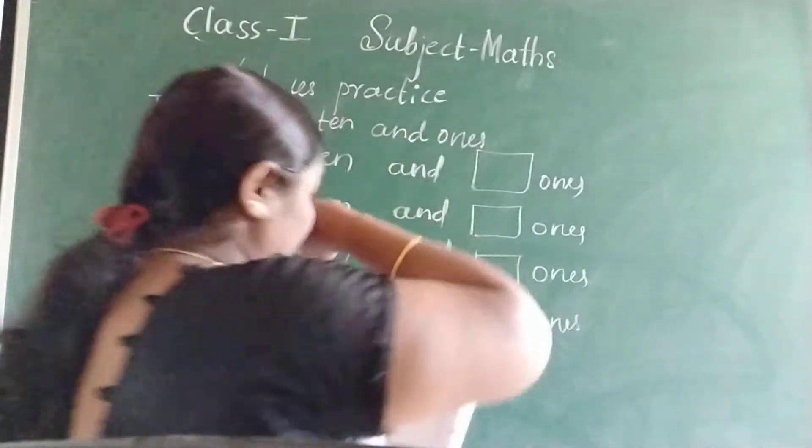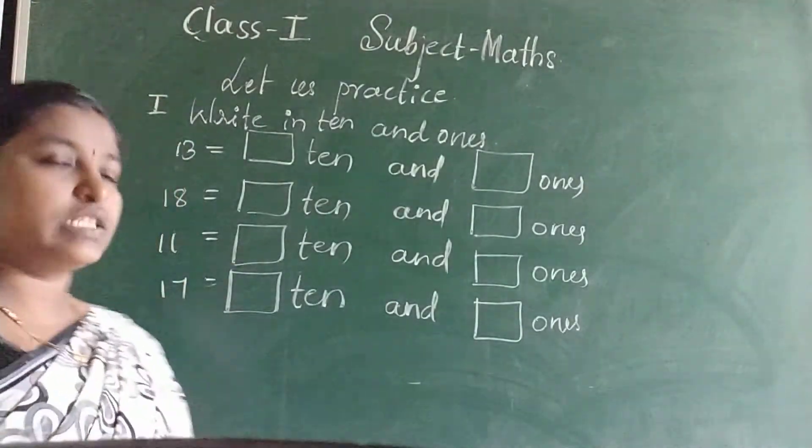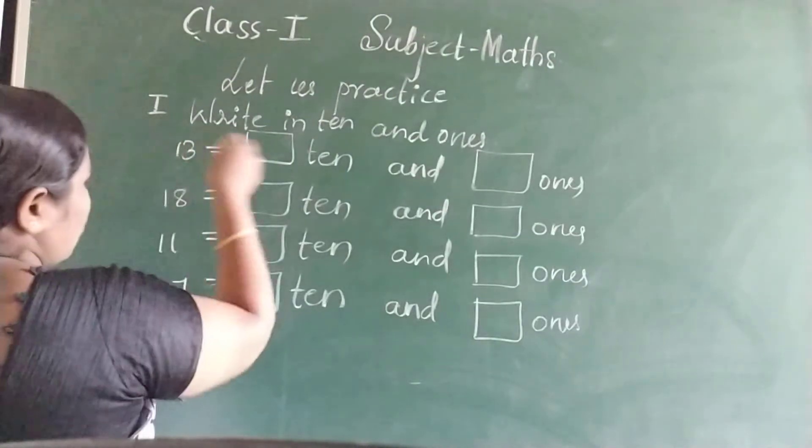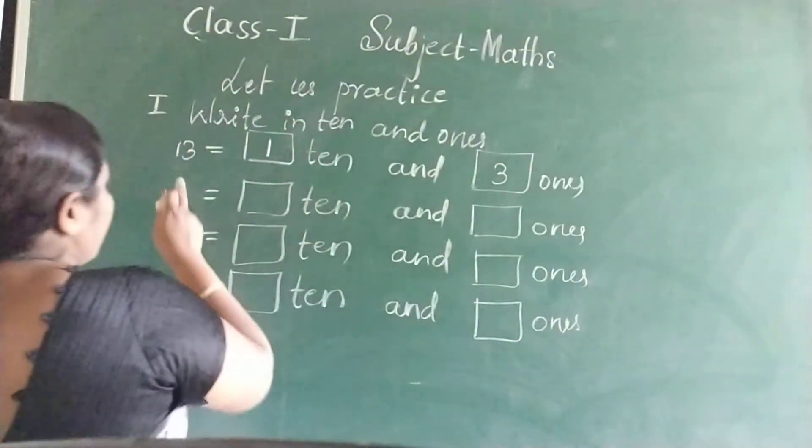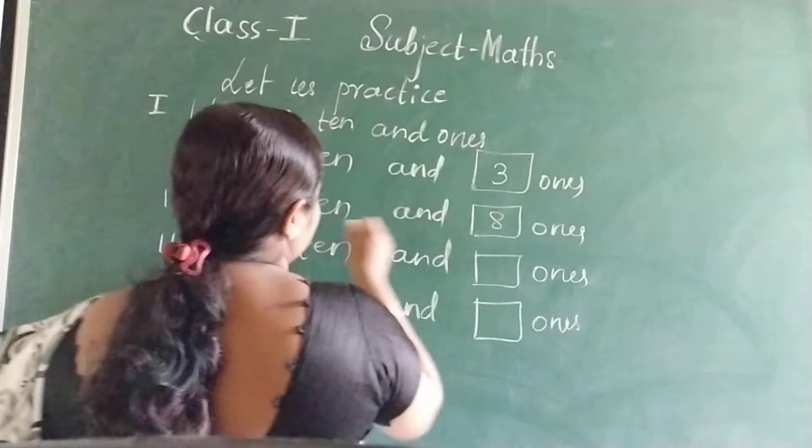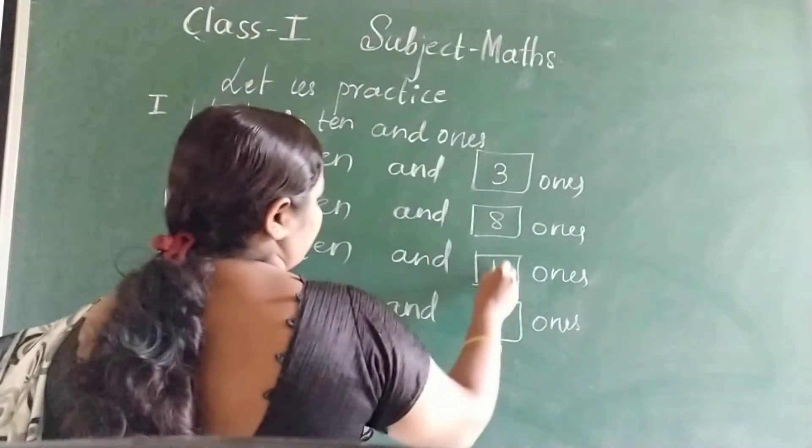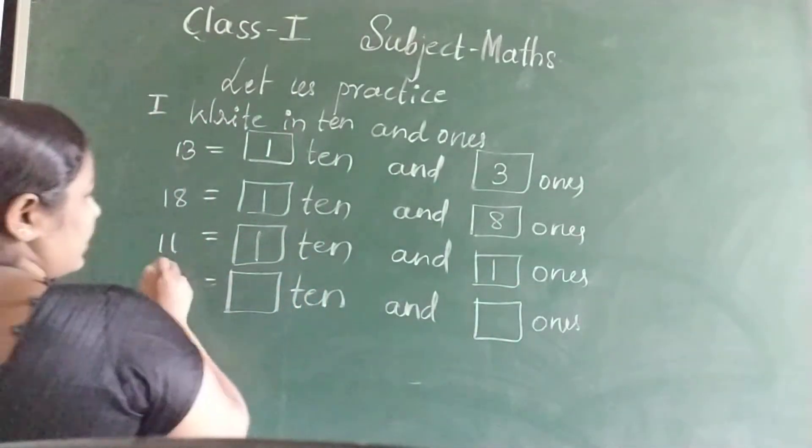Now see, there is a 2 digit number, which is ones and which is tens. 3 ones, 1 ten. So 1 ten, 3 ones. 8 ones, 1 ten. 1 one, 1 ten. 7 ones, 1 ten.